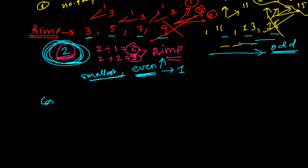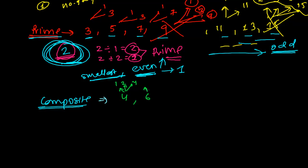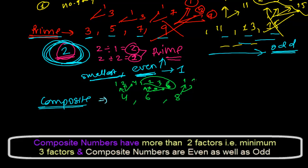Now let's talk about composite numbers. Numbers that are not prime are composite numbers — those which have more than 2 factors. For example, 4 has factors 1, 2, and 4, so it has 3 factors and is composite. 6 has factors 1, 2, 3, and 6 — that's 4 factors, so it is composite. 8 also has many factors: 1, 2, 4, and 8 itself — composite. And 10 can be divided by 1, 2, 5, and 10 itself, giving 4 factors, so 10 is also a composite number. There are a huge number of composite numbers.